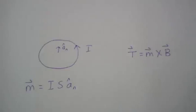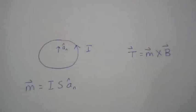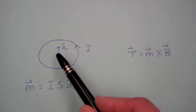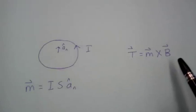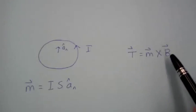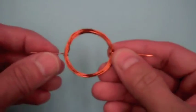So, the loop will rotate until the magnetic dipole moment is in the same direction as the magnetic flux density. The torque will go to zero when the loop has rotated so that this unit normal, A sub n, is pointing in the direction of the magnetic flux density field B.